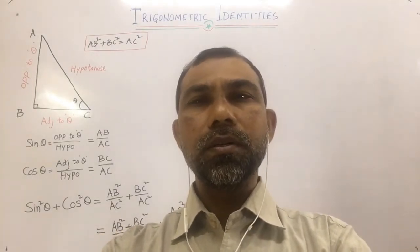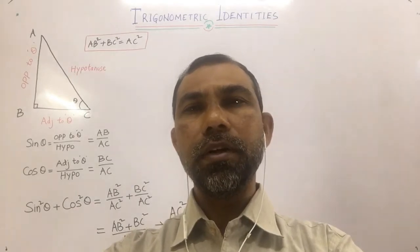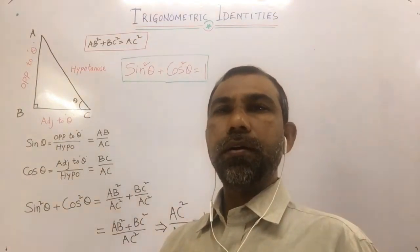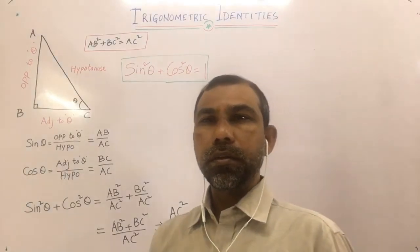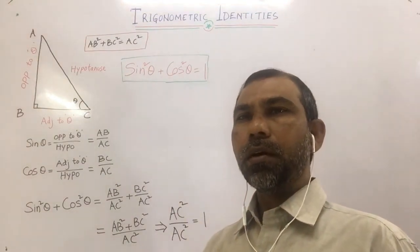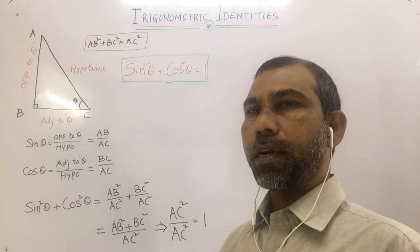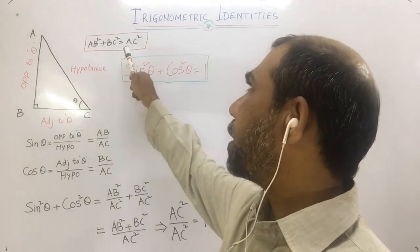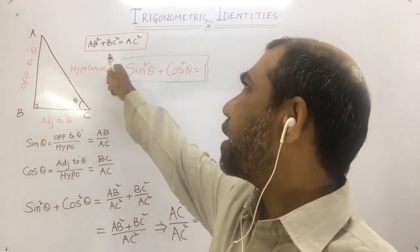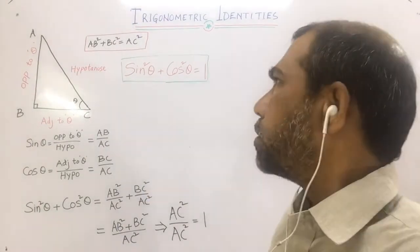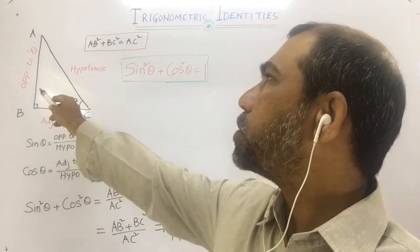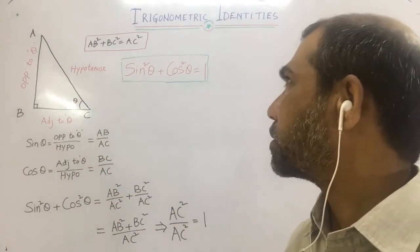Let us derive the trigonometric identities. Here we have triangle ABC with a right angle at B, and AC is the hypotenuse. Applying the Pythagoras theorem for triangle ABC: AB² + BC² = AC². AB and BC are the adjacent and opposite sides to theta, and AC is the hypotenuse.